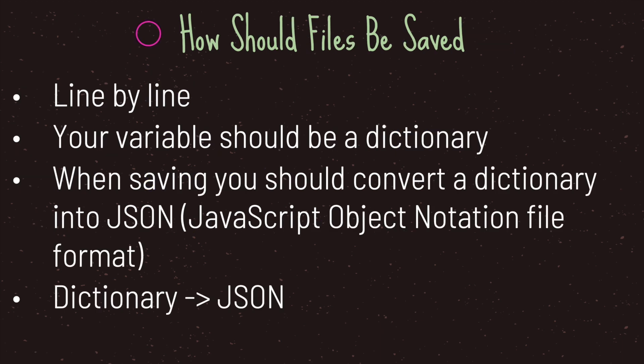Now in Godot there is a recommended way to save your files, and that is line by line. Your variable you want to save should be a dictionary. You take that dictionary and convert it into a JSON (JavaScript Object Notation) format, and then from there you can use the store_line() method.